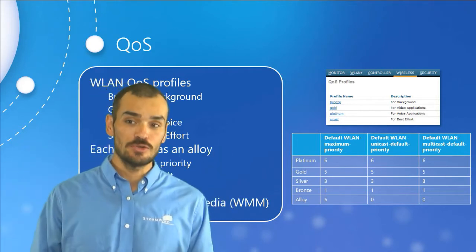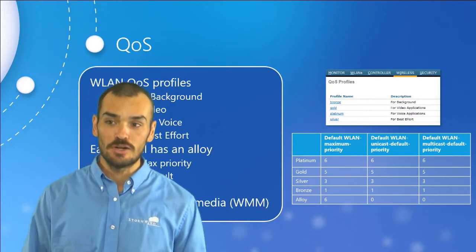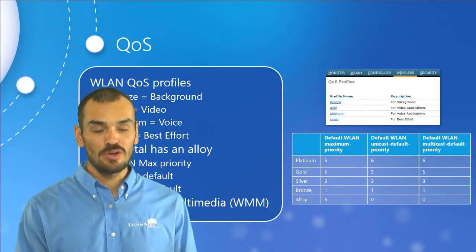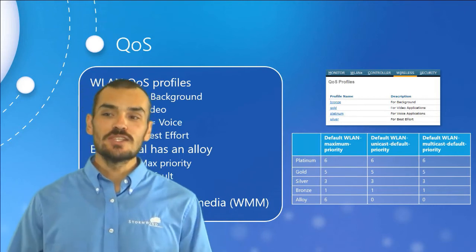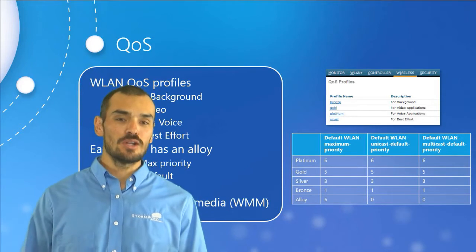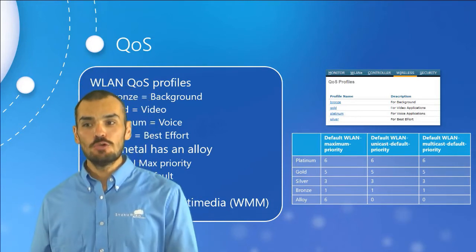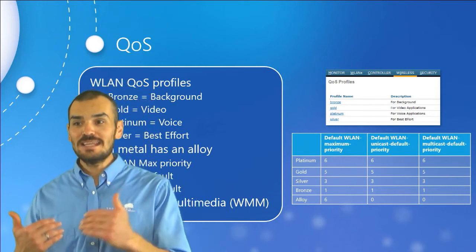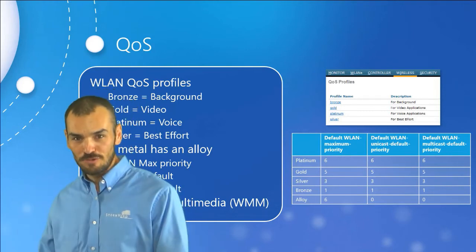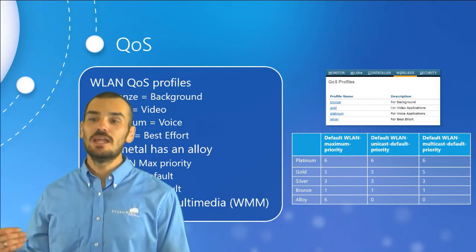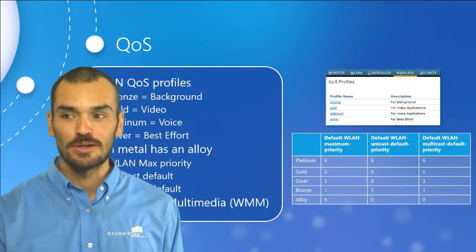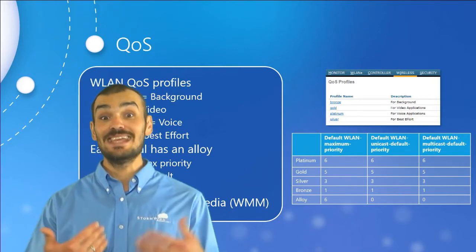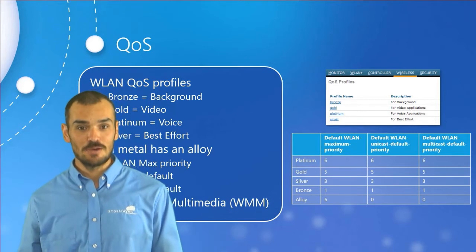An important thing to remember: even with QoS on a wireless network, wireless communication is still different from wired. Wireless is always half-duplex, has fewer channels, and is more prone to latency and jitter. We also have to factor in the additional data tunnel between the controller and its access points. QoS is achieved by adding tags or markings to packet headers, and going between wireless and wired requires more work from the controller, which can copy QoS settings into the CAPWAP headers.